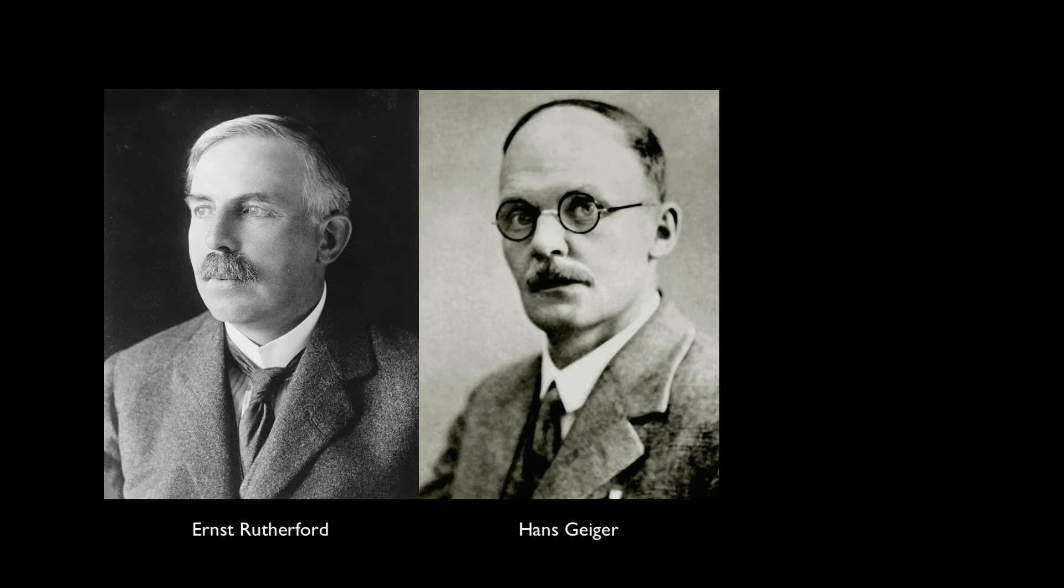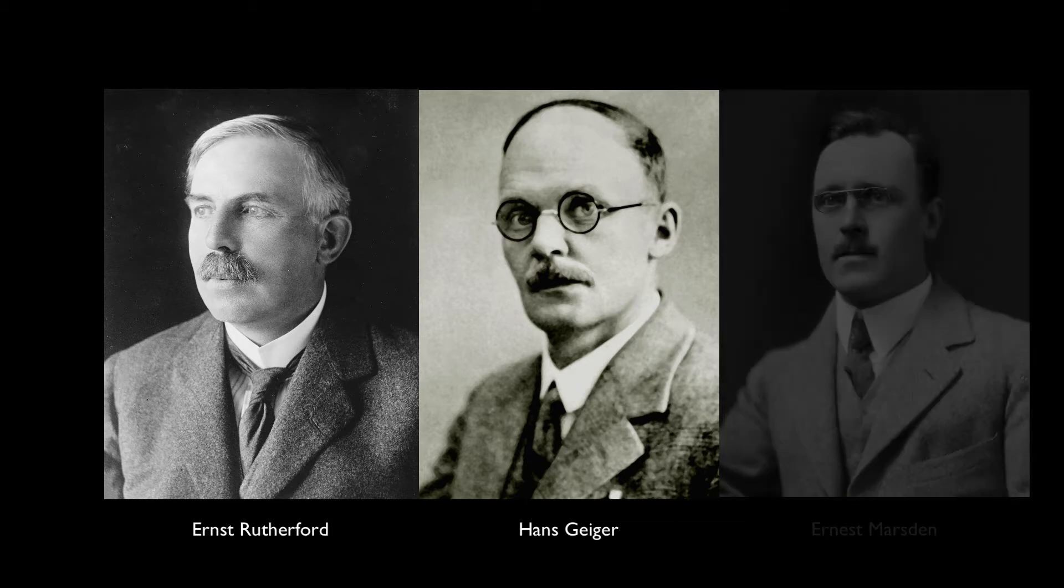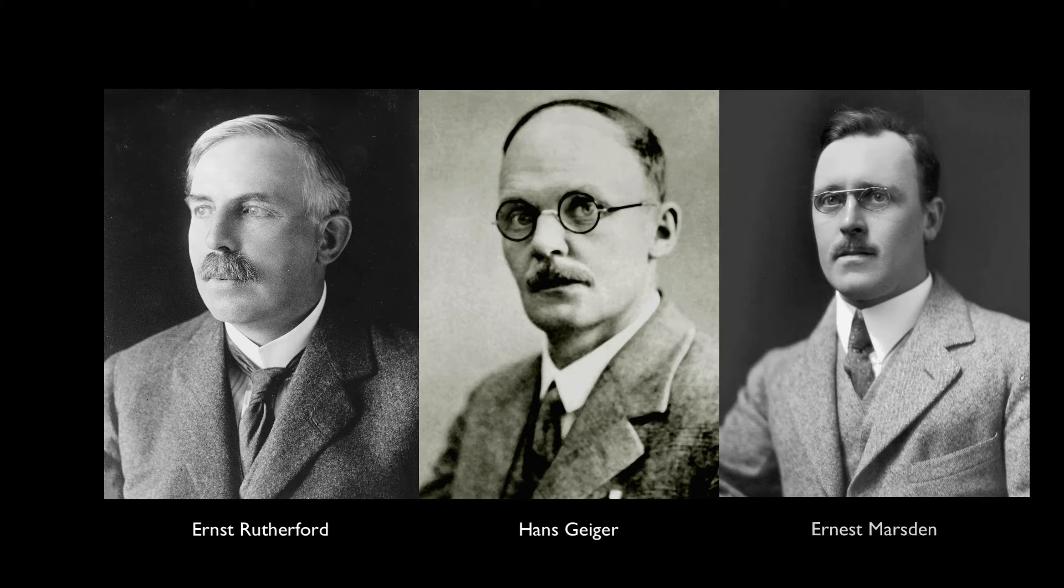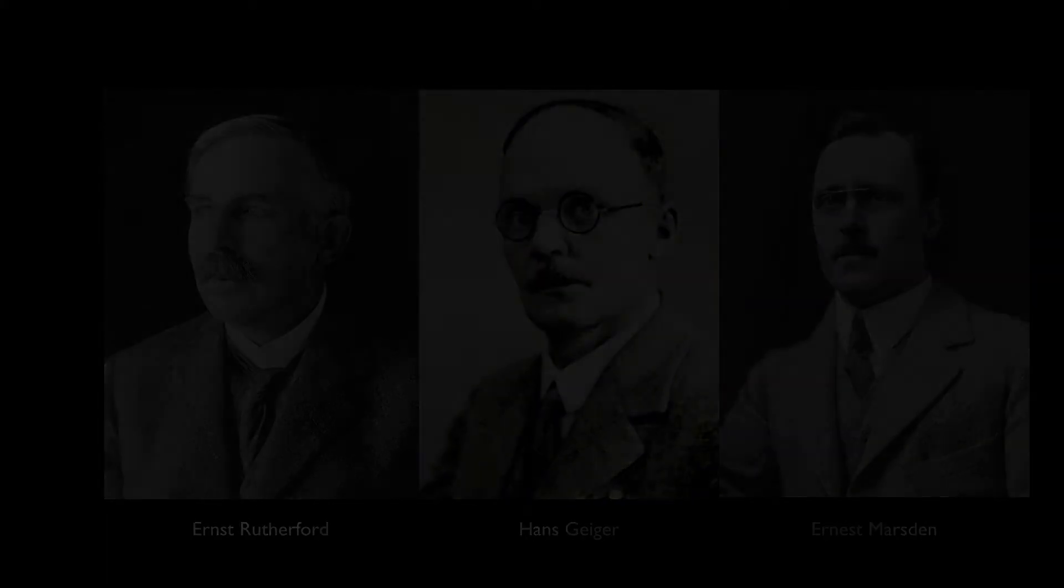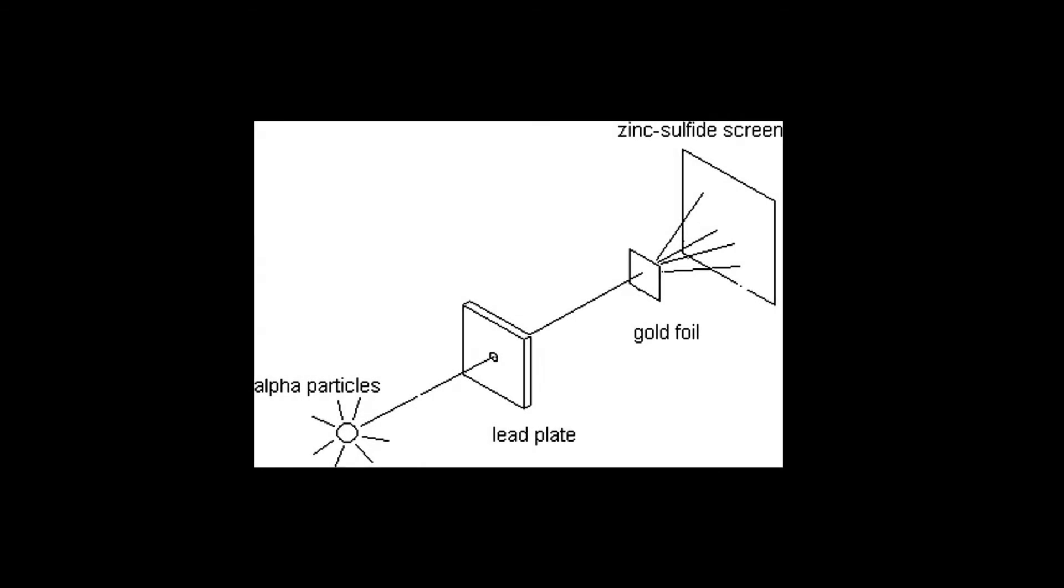At Rutherford's behest, colleagues Hans Geiger and his undergrad student, Ernest Marston, performed a series of experiments where they pointed a beam of alpha particles at very thin metal foils to measure how many alphas passed through. By using a series of sealed glass tubes where the air could be evacuated, they noticed a scattering of alpha particles when shot through very thin gold foil.